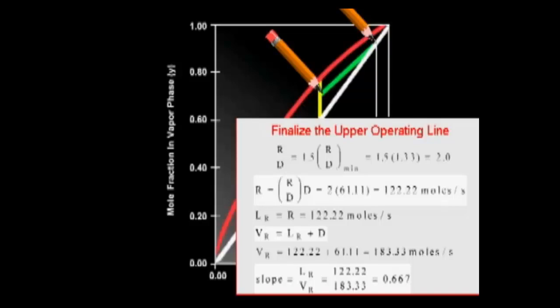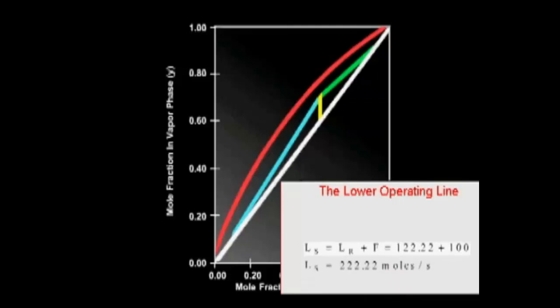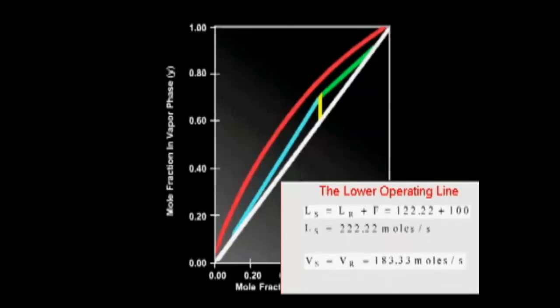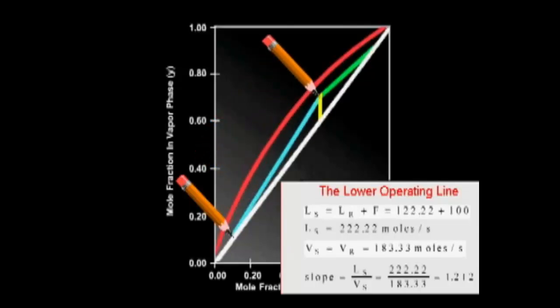Next, we need to determine the slope of the lower operating line. We begin with a mass balance across the feed tray. The feed is a liquid at its bubble point. Therefore, the liquid flow in the stripping section is equal to the liquid flow coming down from the rectifying section plus the feed stream. The vapor flow rate is the same as in the rectifying section. The ratio, and hence the slope of the lower operating line, is equal to 1.212. We can now draw the lower operating line, starting at the point on the 45-degree line which corresponds to the bottoms mole fraction, and drawing a line towards the Q line with a slope of 1.212.